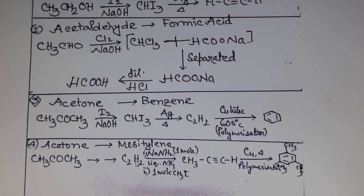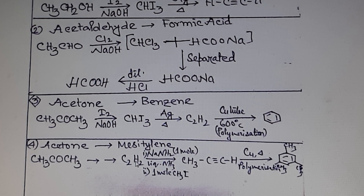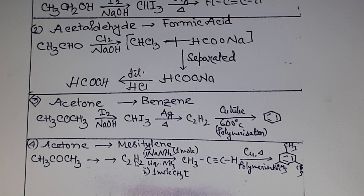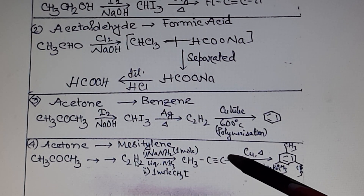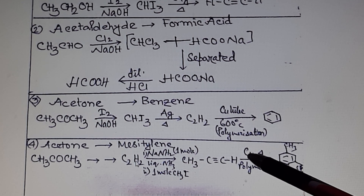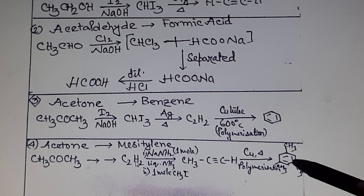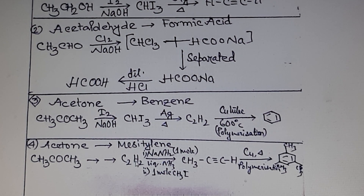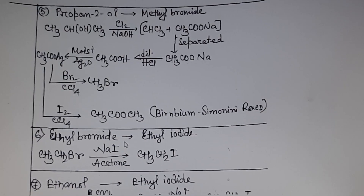Then higher alkyne preparation: acetylene is allowed to react with one mole of sodium in liquid ammonia medium, and the sodium acetylide produced is then allowed to react with one mole of methyl iodide to form propyne (CH₃C≡CH). Propyne then polymerizes when passed through a hot copper tube — three moles of propyne polymerize to form mesitylene, i.e., 1,3,5-trimethylbenzene.